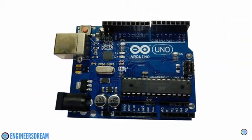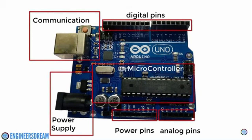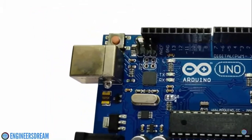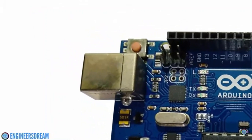The Arduino board you're seeing right now is the Arduino Uno, and it is one of the easiest Arduino boards to get started with. For explaining the Arduino Uno, I'll first divide it into 6 different parts. You can see these parts in front of your screen. I will start explaining from the top left part. I basically call this part the communication part.